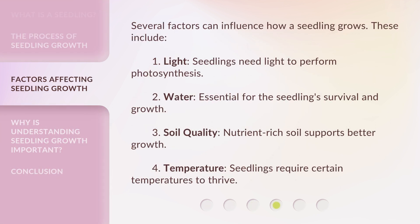Several factors can influence how a seedling grows. These include: 1. Light — seedlings need light to perform photosynthesis. 2. Water — essential for the seedling's survival and growth. 3. Soil quality — nutrient-rich soil supports better growth. 4. Temperature — seedlings require certain temperatures to thrive.